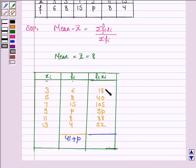And here, we have to find summation fi xi, that is, the sum of all these. And the sum is equal to 303 plus 9p.